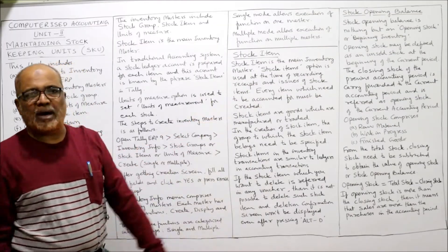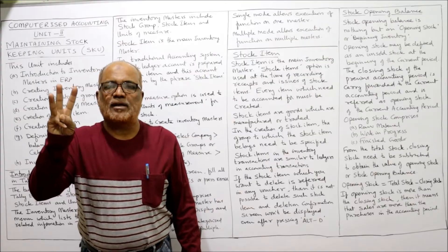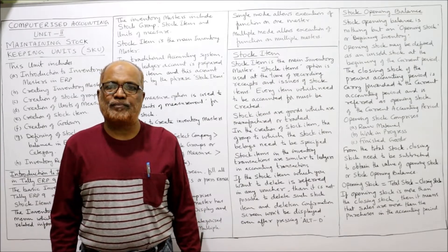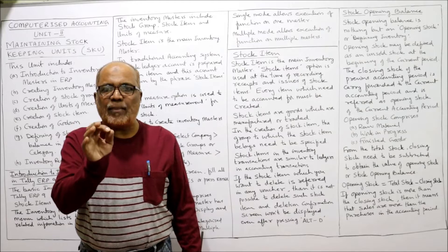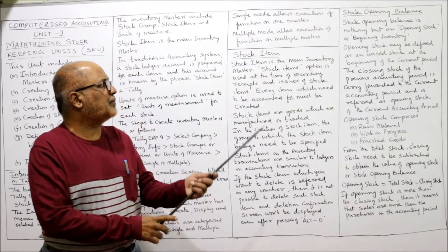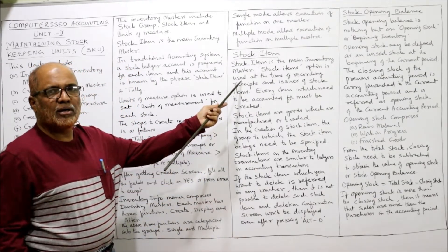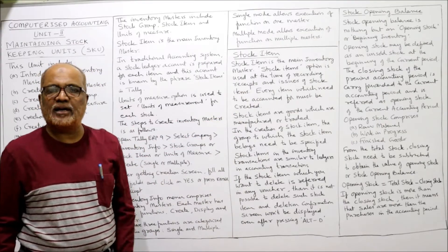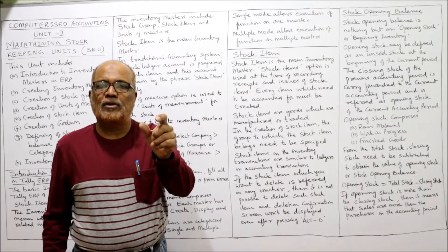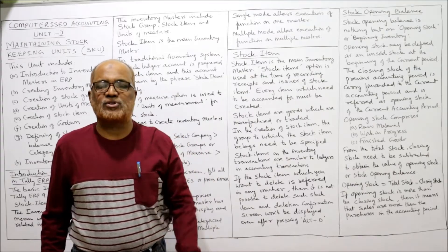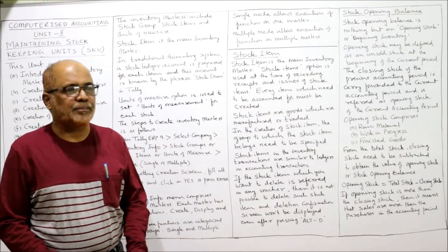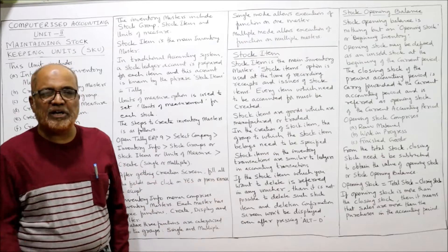Stock item is the main inventory master. In inventory masters, three items are there: stock item, stock group, and unit of measurement. Out of these three, the basic master is the stock item. Stock item option is used at the time of recording receipts and issues of stock items. Whenever there is a receipt or issue of stock, we use the option stock item. Every item which needs to be accounted for must be created.